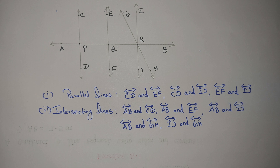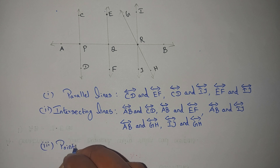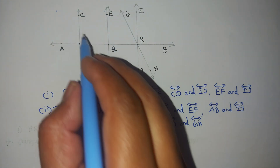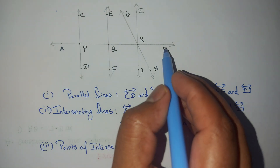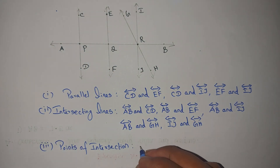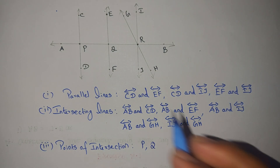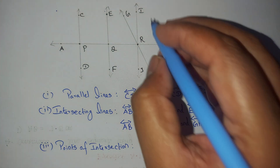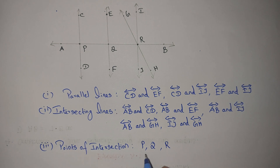Problem number three: we need to find the points of intersection. A point of intersection is where two lines meet. AB and IJ meet at point R. IJ and GH meet at point R. The total points of intersection in the figure are three: P, Q, and R.